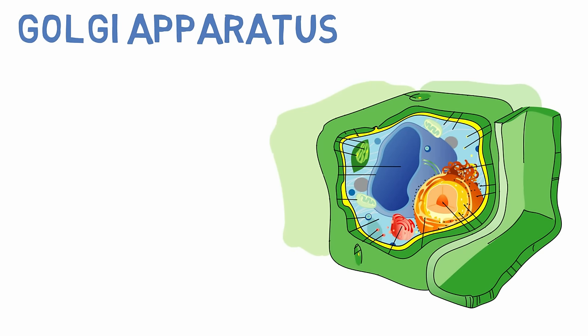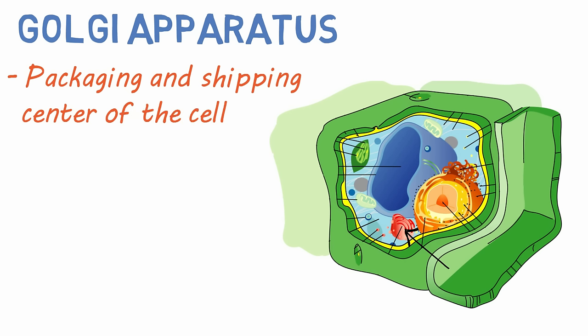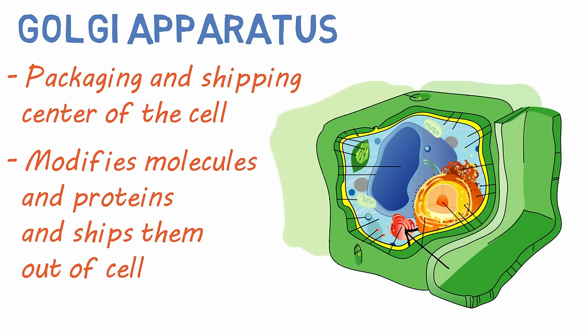The Golgi apparatus, or Golgi body, is the packaging and shipping center of the cell. It modifies molecules and proteins produced by the cell and sends them in vesicles to be shipped out of the cell.